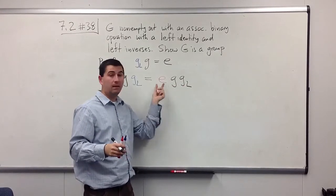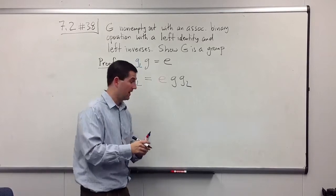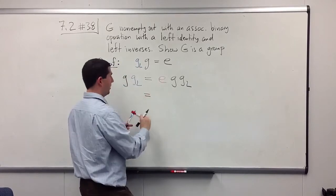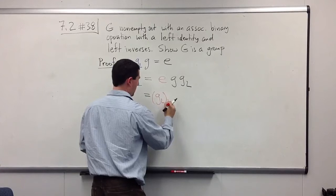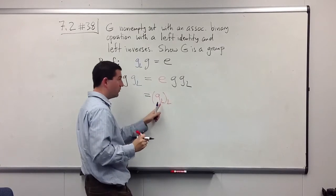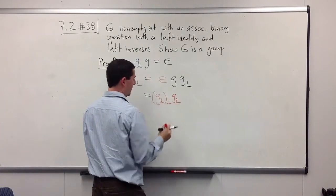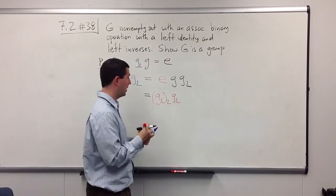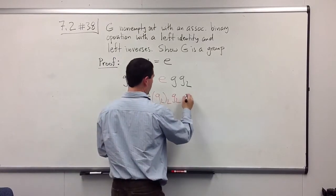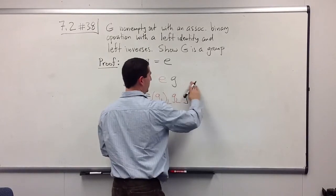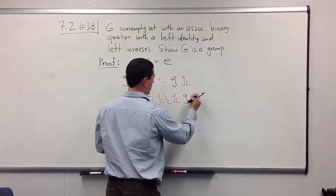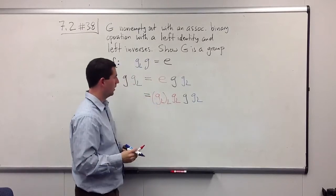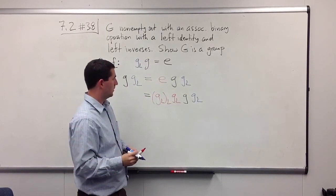And I'm going to replace e by actually the same thing I did the last time. I'm going to write down the left inverse of g_l times g_l. Since this is really a left inverse, this makes sense. It's still e. And then I get g times g_l.